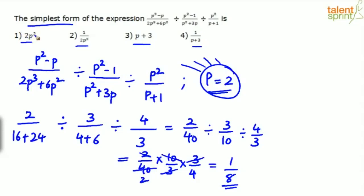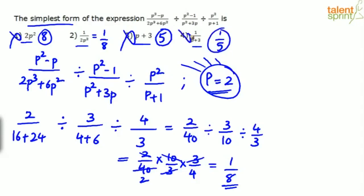Option 1: 2p² = 2·4 = 8. Not 1/8. Option 2: 1/(2p²) = 1/8. That matches! Let's quickly verify the others — p + 3 = 5, and 1/(p+3) = 1/5. Neither matches. So the answer is option 2. You can substitute any value, but larger values make calculation complex. Avoid p = 1 as it leads to undefined results.